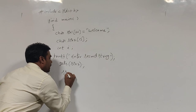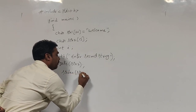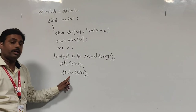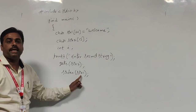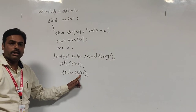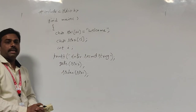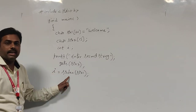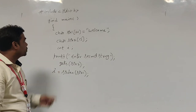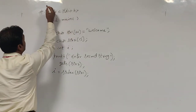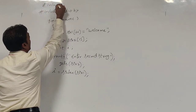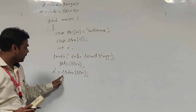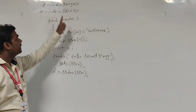We have the strlen function — strlen(str1). String length is the built-in function which is already defined in the string.h header file. It takes one parameter; it counts how many characters are there in str1, and that value is stored in the integer variable i. We also need to include one more header file: hash include string.h. We are using the strlen built-in function, which is available in the string.h header file.